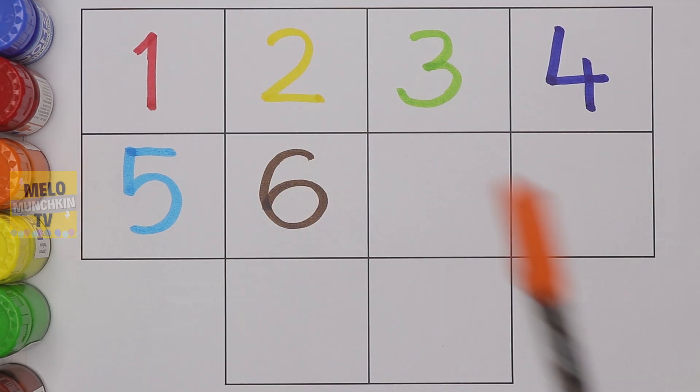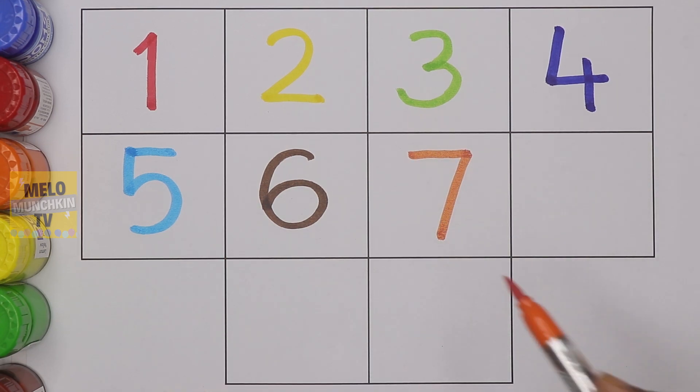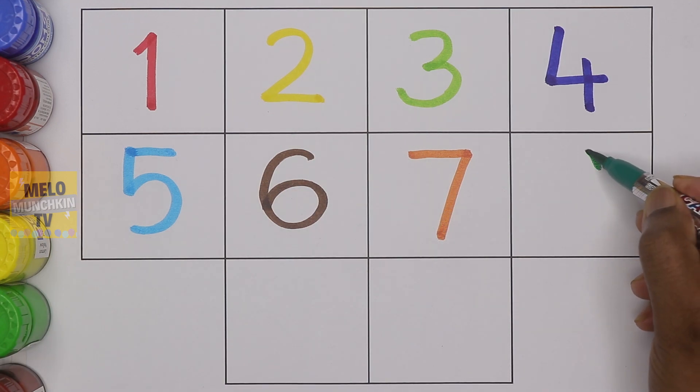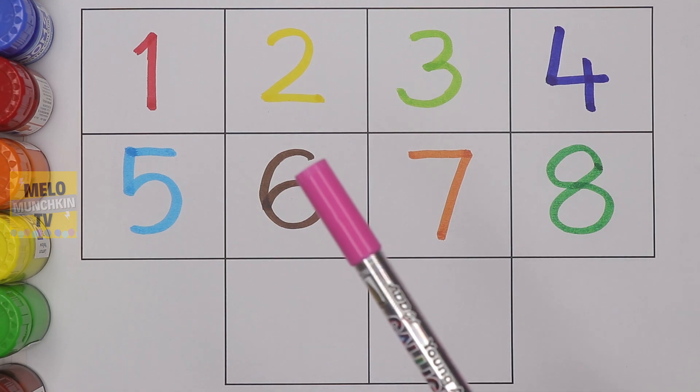Orange color, this is number seven. Number seven. Dark green color, this is number eight. Number eight.